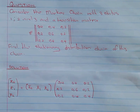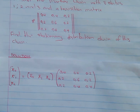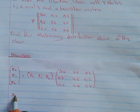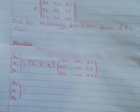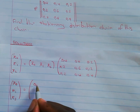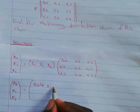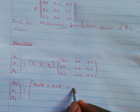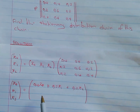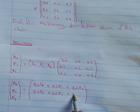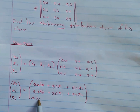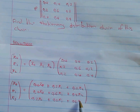We need to simplify the right-hand side, which is a simple multiplication of matrices. Applying the row vector to each column of the transition matrix, we get: 0.4π₀ + 0.2π₁ + 0.2π₂ for the first entry, then 0.4π₀ + 0.6π₁ + 0.4π₂ for the second, and 0.2π₀ + 0.2π₁ + 0.4π₂ for the third.